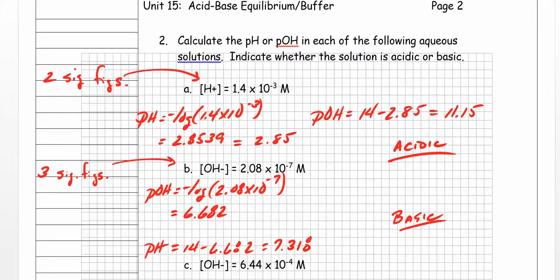All right, let's go ahead and get started. Welcome back to unit 15 — this is acid-base equilibrium and buffers. I want to do a couple of calculations with you that involve pH and pOH. We looked at this in a little detail last time, but I want to take a closer look and make sure we can do these types of calculations. I'll do two with you, and then you can practice the rest on your own.